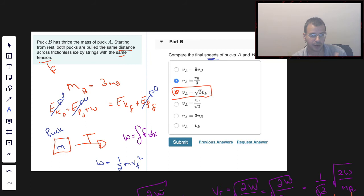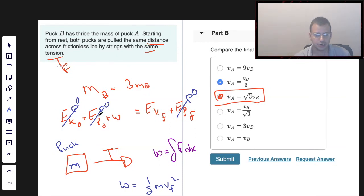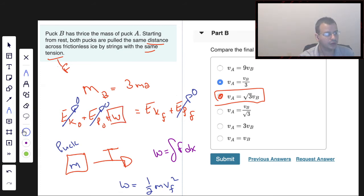So to kind of take a look back at what we did here, we had two pucks. One was 3 times the mass of the other one. They said that they were pulled the same distance across frictionless ice. We look at this as conservation of energy, and we said that since the left side and the right side aren't equal, the difference between them is the work added. That work added was going to be integral of Fdx, which is the force.